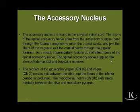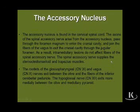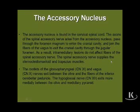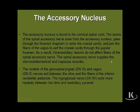The accessory nucleus is certainly not a brainstem structure, but it is a nucleus found in the cervical portion of the spinal cord. The axons of the accessory nerve leave from the cervical cord, pass up through the foramen magnum, and then re-exit the skull through the jugular foramen. Even though it is a cranial nerve, it is not a brainstem cranial nerve — it's anatomically associated with the cervical spinal cord and will not be affected in any brainstem lesion.